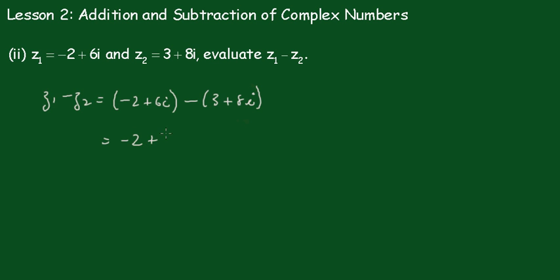Minus 2 plus 6i minus 3 minus 8i. Now combining these real parts together, minus 2 minus 3 is minus 5, and 6i minus 8i gives me minus 2i. That's my final answer.